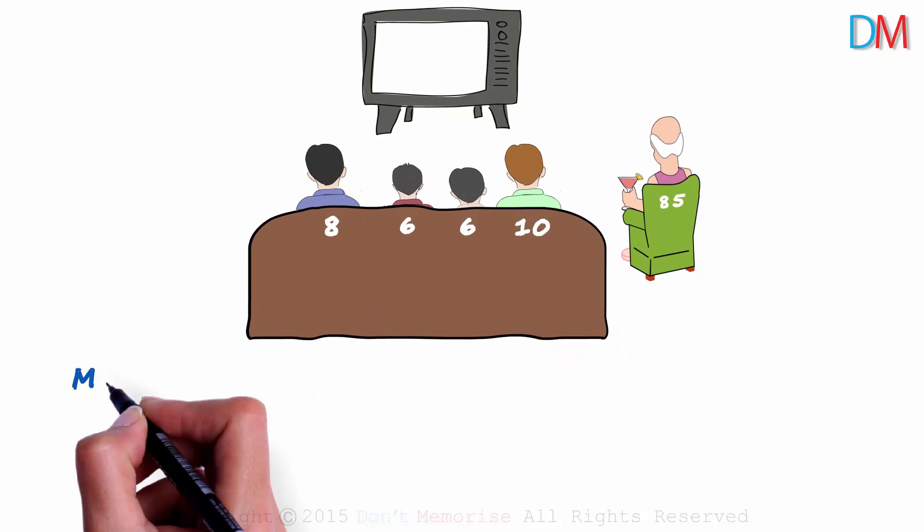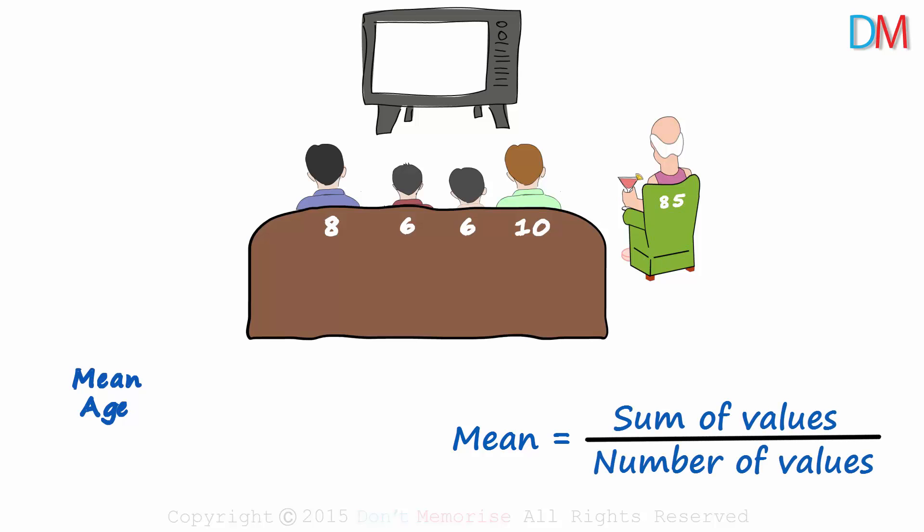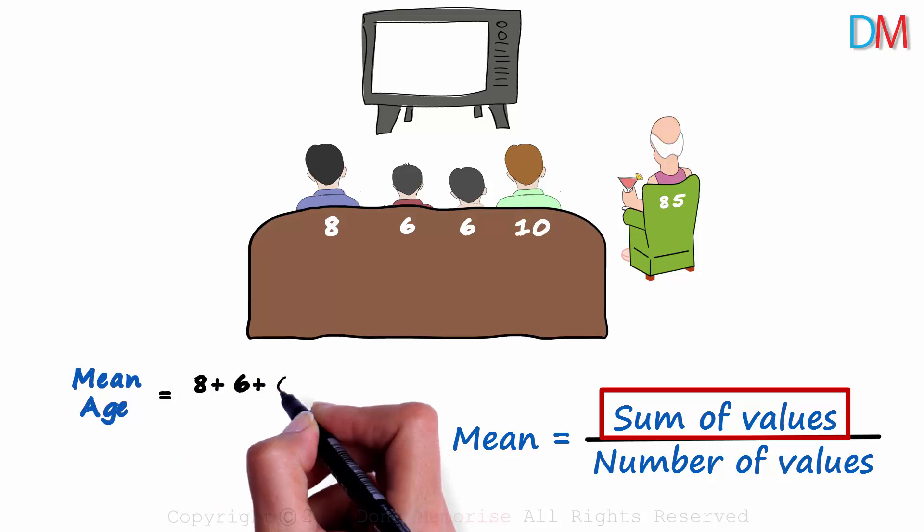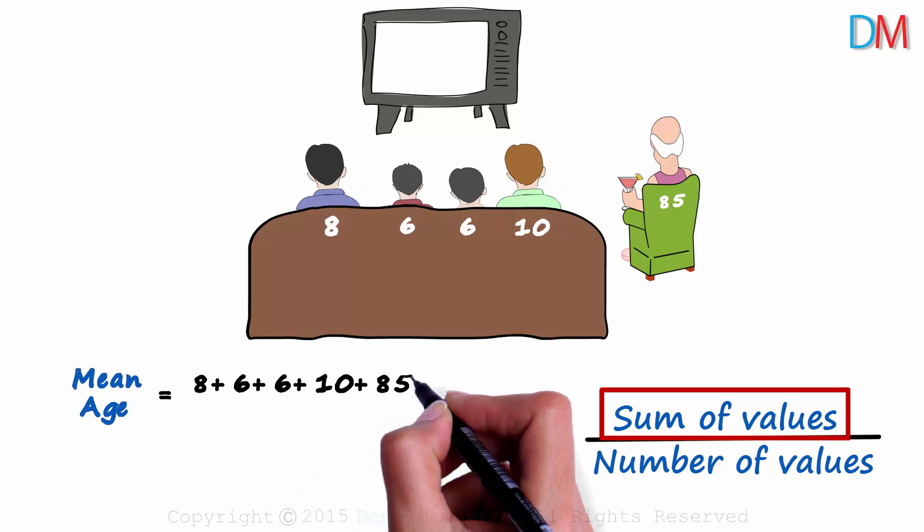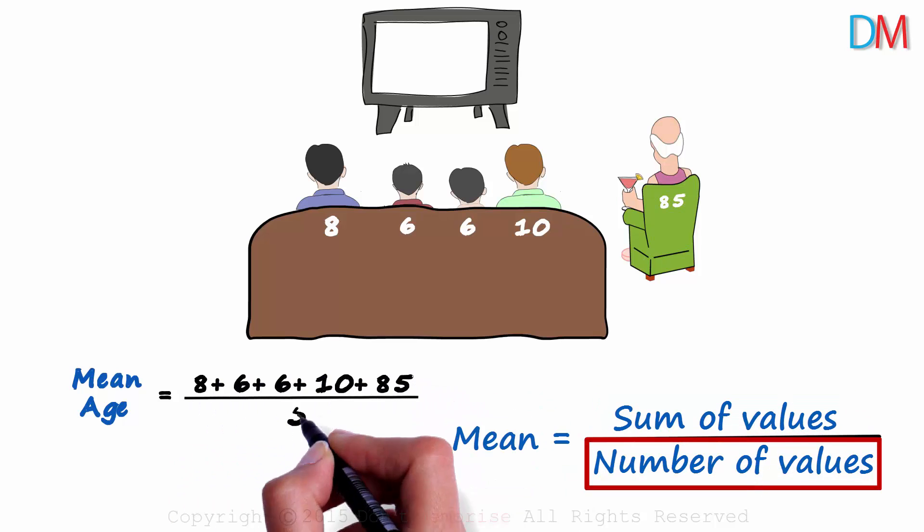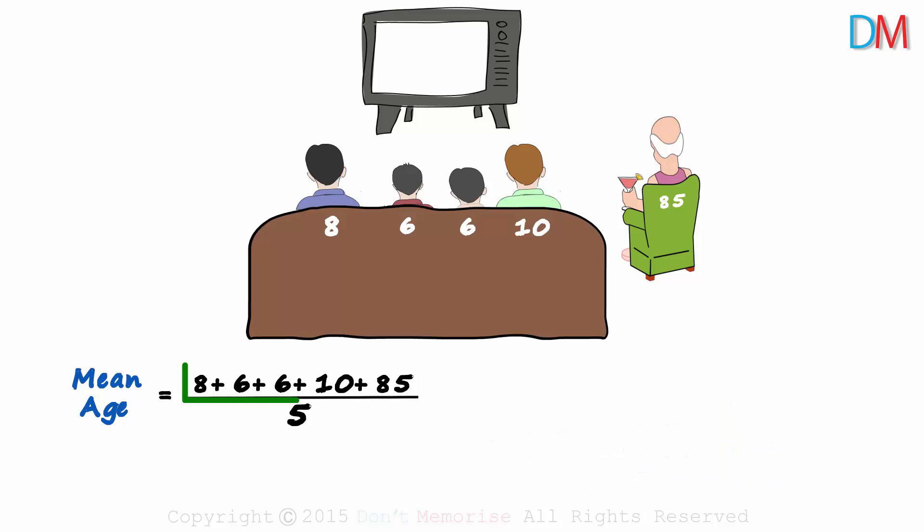You decide to find the mean age. Arithmetic mean is the sum of values divided by the number of values. The sum is 8 plus 6 plus 6 plus 10 plus 85, and the number of values is 5. The sum equals 115. So the mean age would be 115 divided by 5. The result you get is very interesting. 5 times 23 is 115. You get the mean age as 23 years.